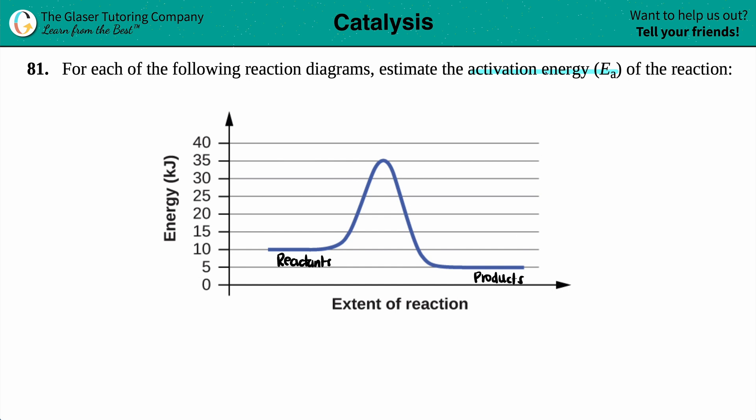Now, the activation energy is the energy that you need to go over the hump or the peak. It's the predetermined amount of energy needed to actually get to your products. And the activation energy is always from the reactants to the transition state.